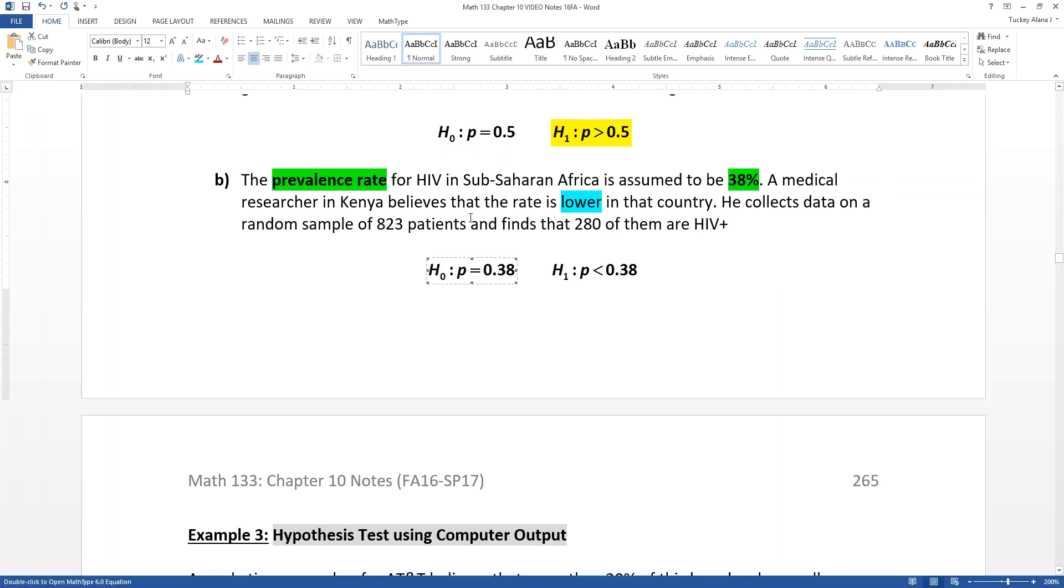So the prevalence rate portion lets you know that it's a proportion problem and the 0.38 lets you know that it's 0.38. And then the lower than gives you your alternative hypothesis right there.